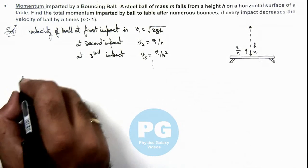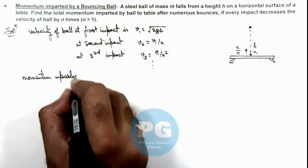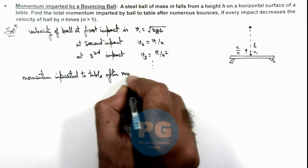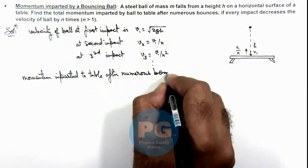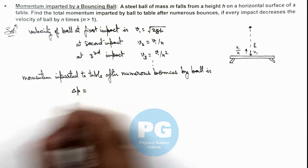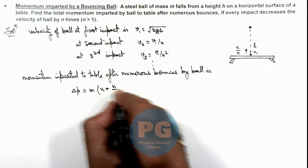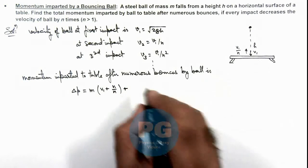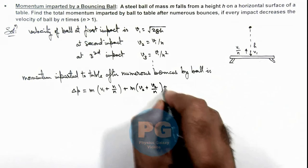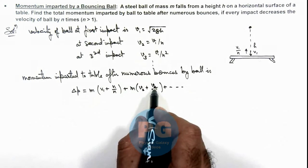So we can calculate the momentum imparted to the table after numerous bounces by the ball. This can be written as delta p, which is equal to m times: at the very first impact the momentum imparted is v1 plus v1/n; after the second impact it is m multiplied by v2 plus v2/n, and so on. Here v2 = v1/n, and v2/n becomes v1/n².